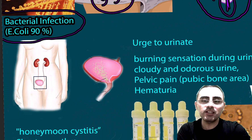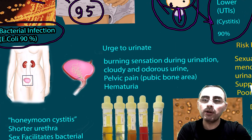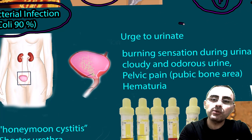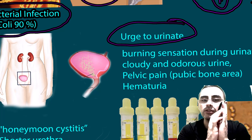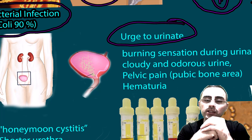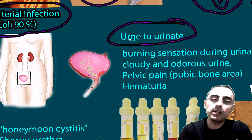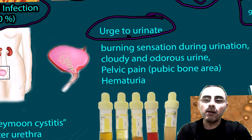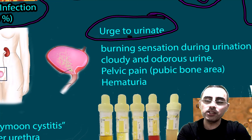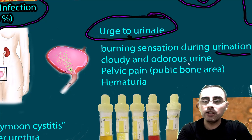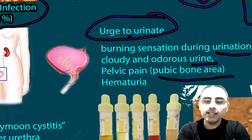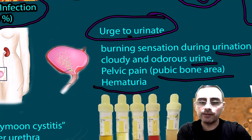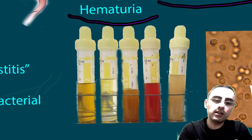The most common symptoms of lower urinary tract infection are: urge to urinate — the person wants to urinate and finds it difficult to hold — burning sensation during urination, cloudy and odorous urine, pelvic pain and pain in the pubic bone area especially for women, and hematuria, which means blood in the urine.